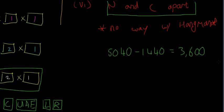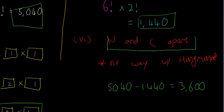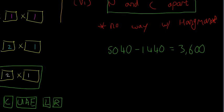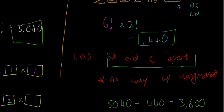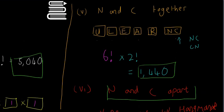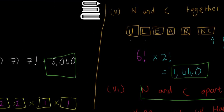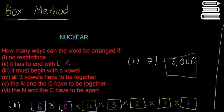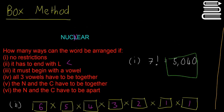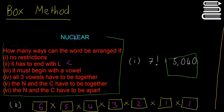So 3,600 is the number of ways to arrange the letters in 'nuclear' where N and C are apart. That's a really difficult example — it's something you have to spot and remember this type of approach if it comes up in an exam. These questions should cover you for pretty much everything they're going to ask.